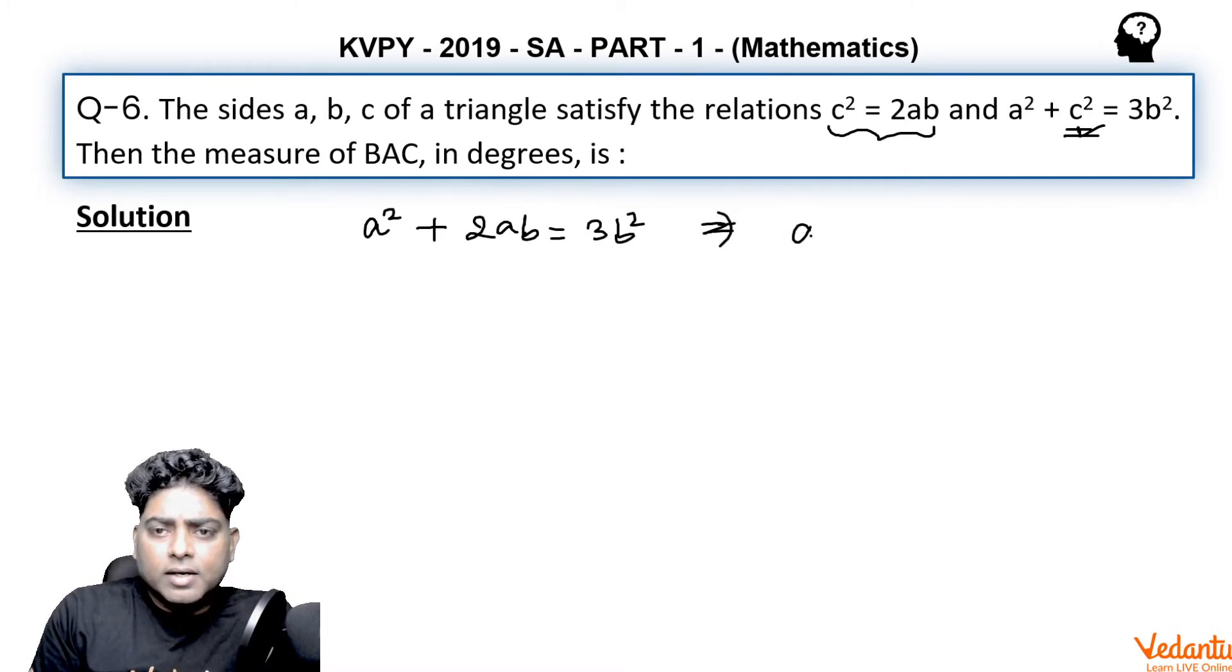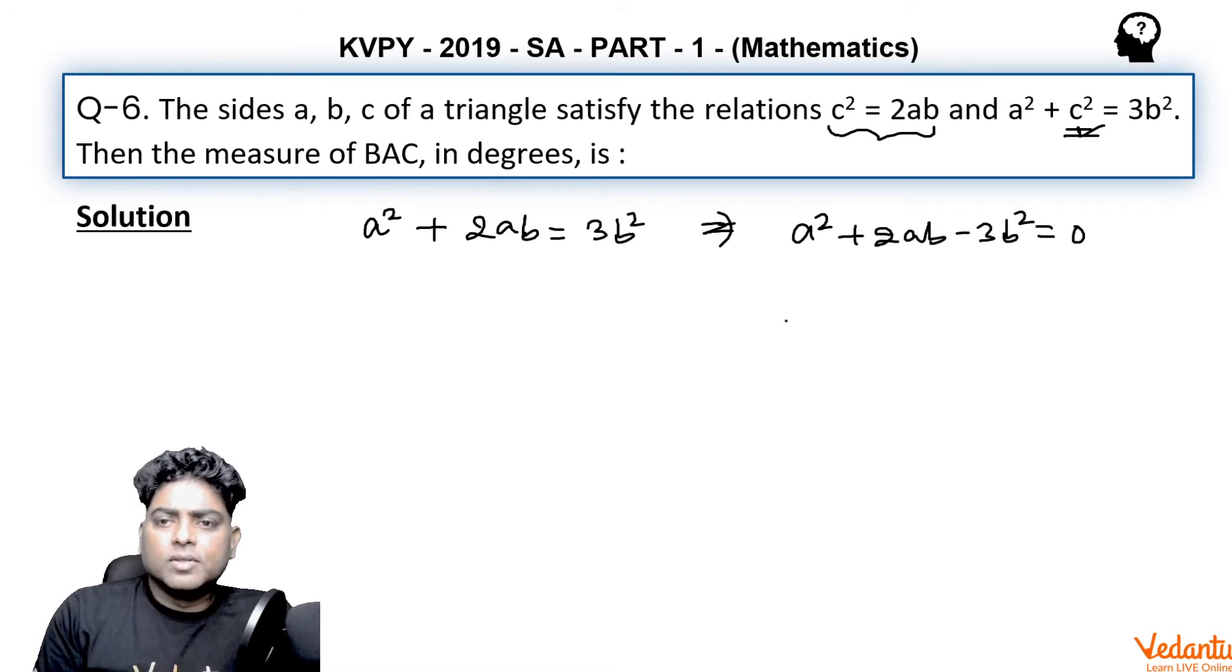we get a² + 2ab - 3b² = 0. Now if we go for making factors, it is very easy to make factors here.